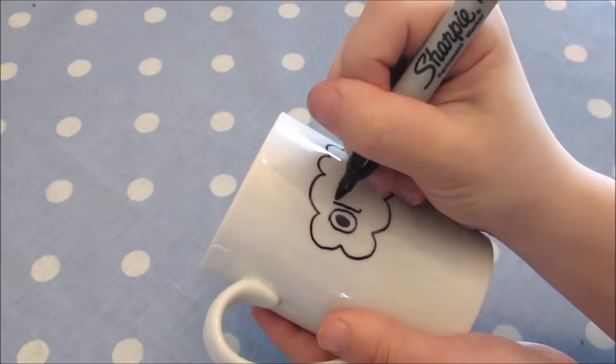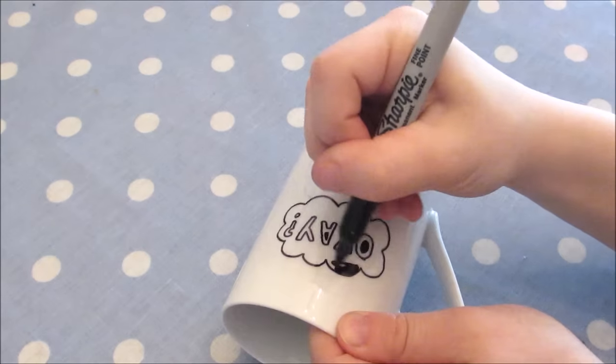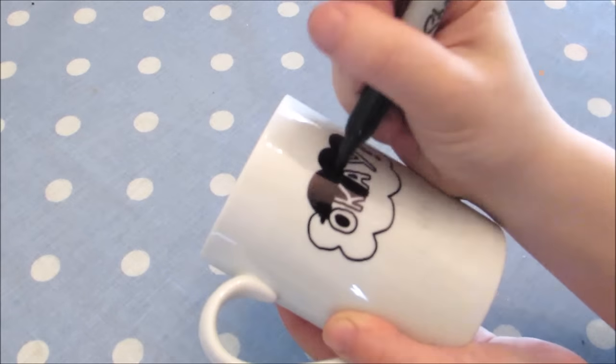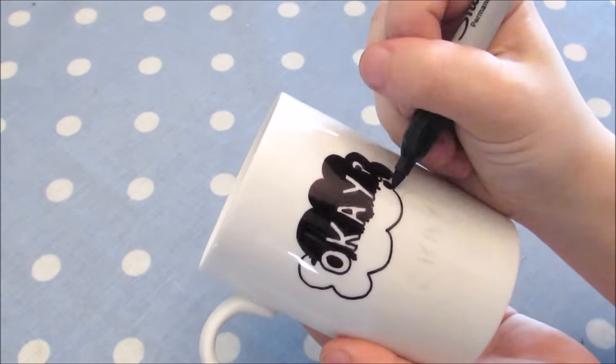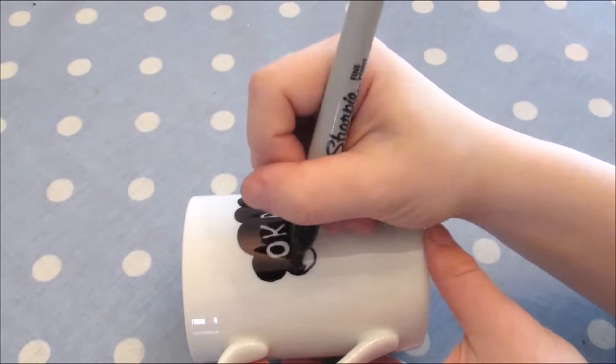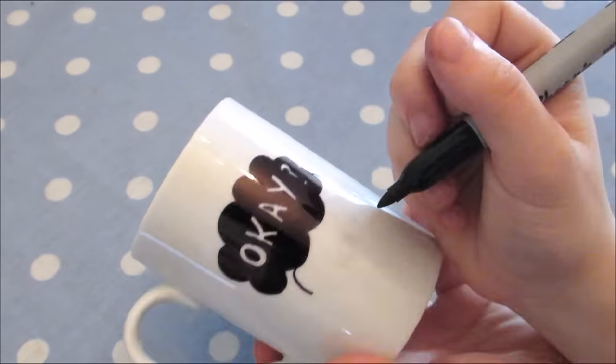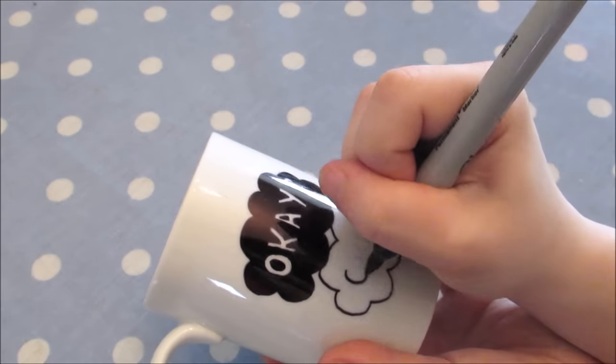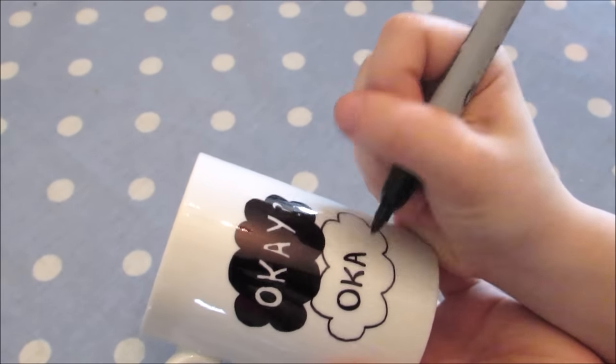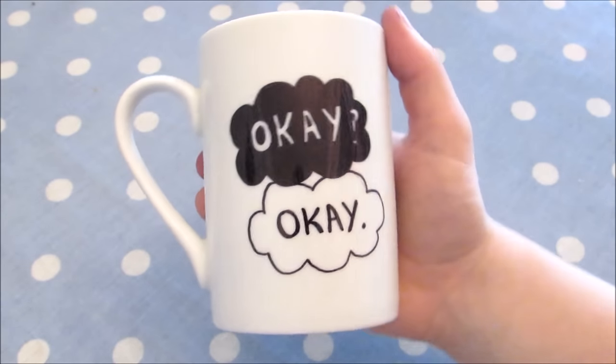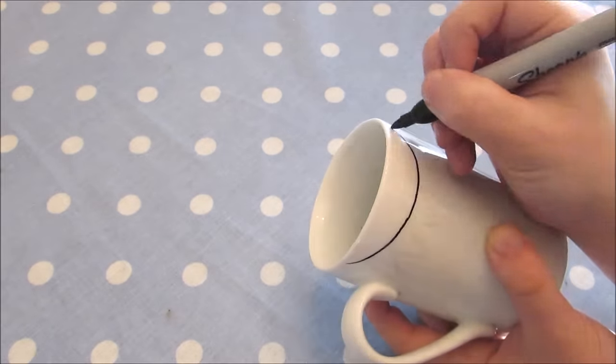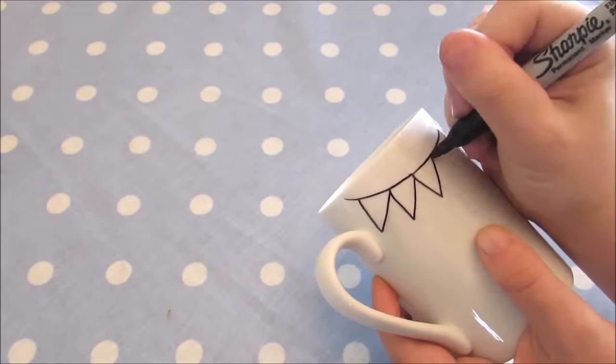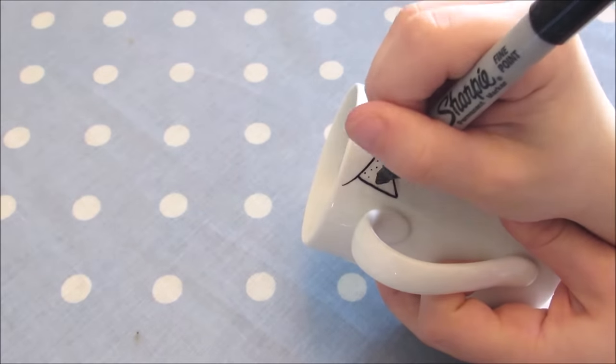The next design is influenced from the film The Fault In Our Stars. I just used a black Sharpie to draw some bunting along the top of the mug, coloring in each triangle with a different pattern.